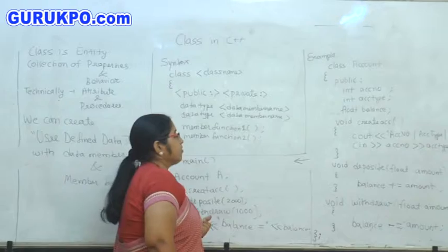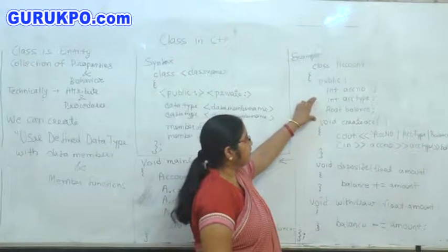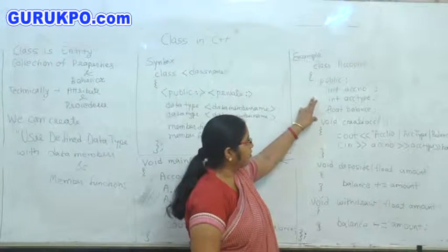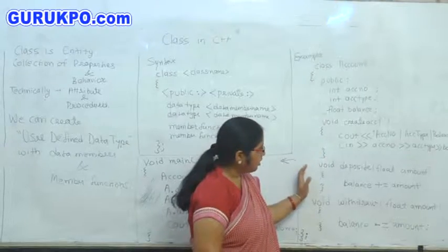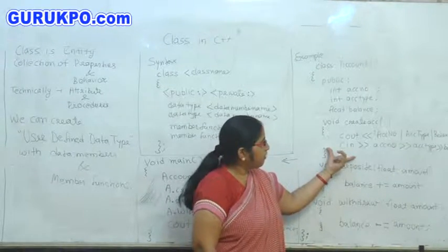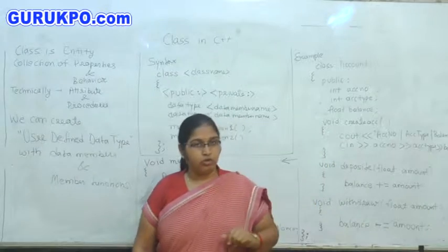Now, here we specify this as public. So, we can utilize from object as well as from the members of the function. This member of function can utilize private also.